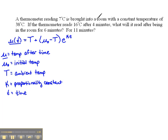For the problem that they've given us, let's identify some variables here. Let's see if we can pick out what would be mu, mu naught, T, K, and time t.